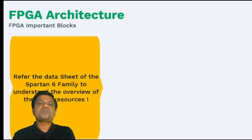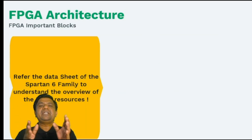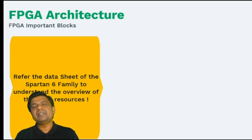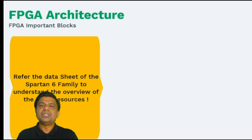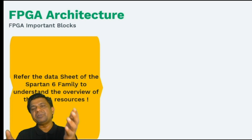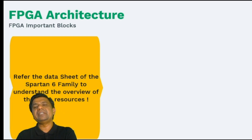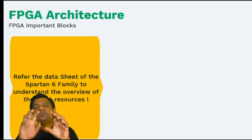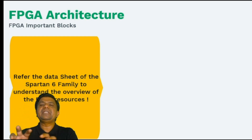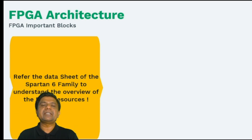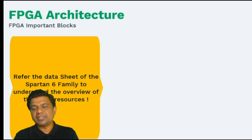The objective is to understand FPGA architecture — which are the important functional blocks of these FPGAs that we can use as resources. Whatever RTL design we have at a higher level, we get a gate-level netlist, and the tool uses that during design and implementation. The FPGA tool tries to map the logic using FPGA resources onto the FPGA fabric. You can download the datasheet of the Spartan 6 family to understand the various FPGA resources.